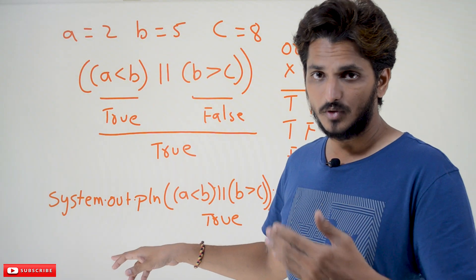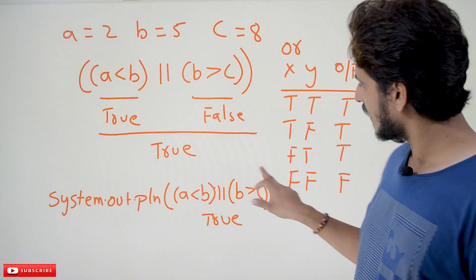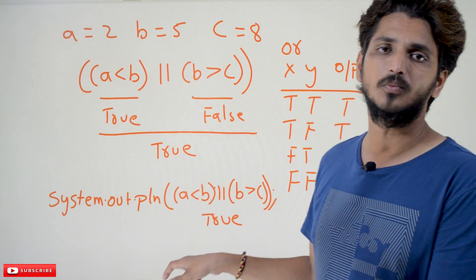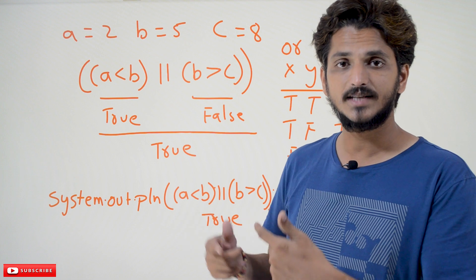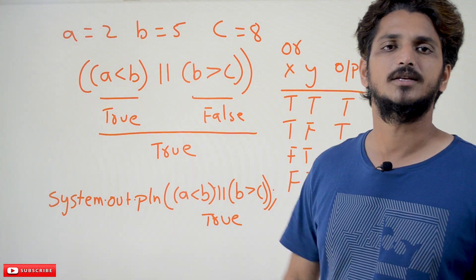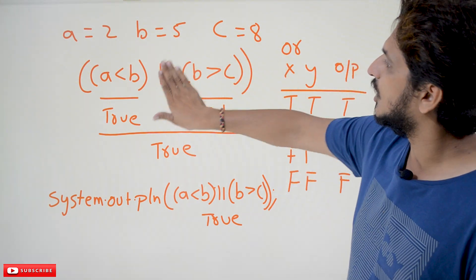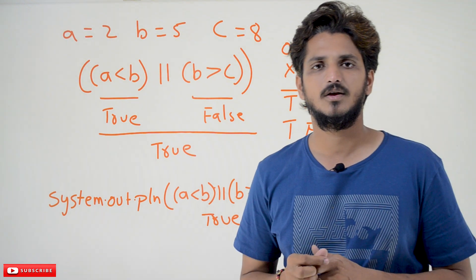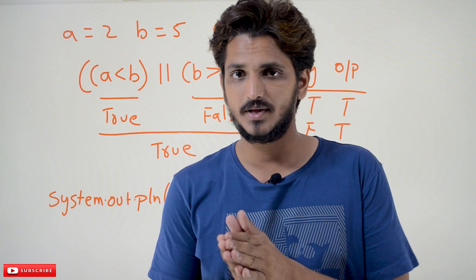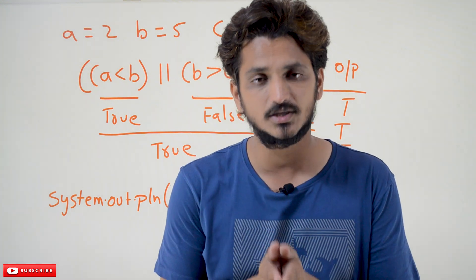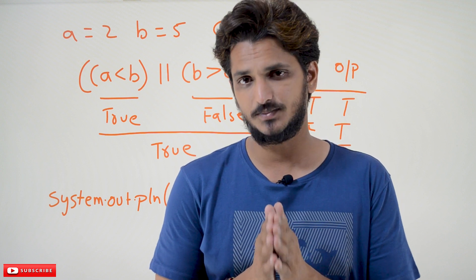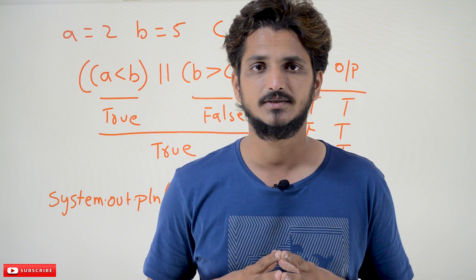Try to execute this code: write A less than B OR B greater than C — it is going to display as true. Do different examples by taking different int values and try to execute them. You will understand how to use logical AND and logical OR operators. Hope you understand logical AND and logical OR operators. If you have any questions, please post them in the comment section below. Thanks for watching. If you haven't subscribed, please subscribe to our channel and press the bell icon for the latest updates. Thank you.